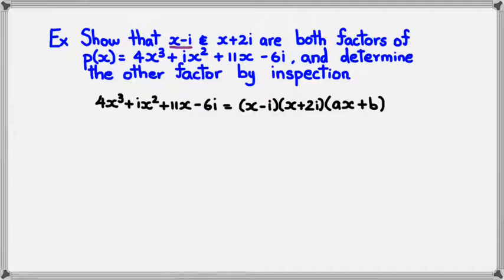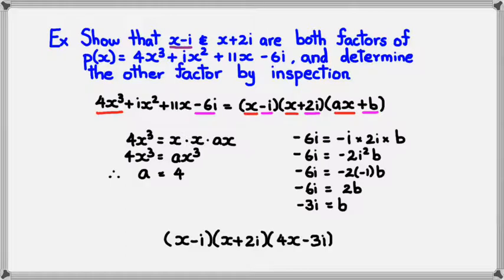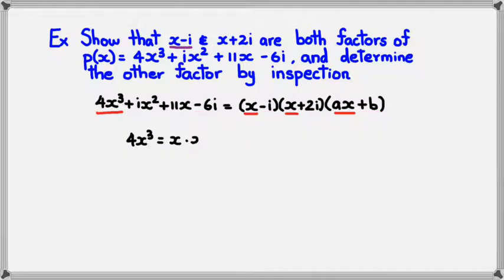So what we can do is we can inspect it. For example, if you look at the coefficient of x cubed, it's actually 4, which means x multiplied by x multiplied by ax should equal 4x cubed. We've got 4x cubed equals x times x times x times ax, and this can be simplified as ax cubed. So we know that 4x cubed equals ax cubed. Therefore, we can say a is equal to 4.